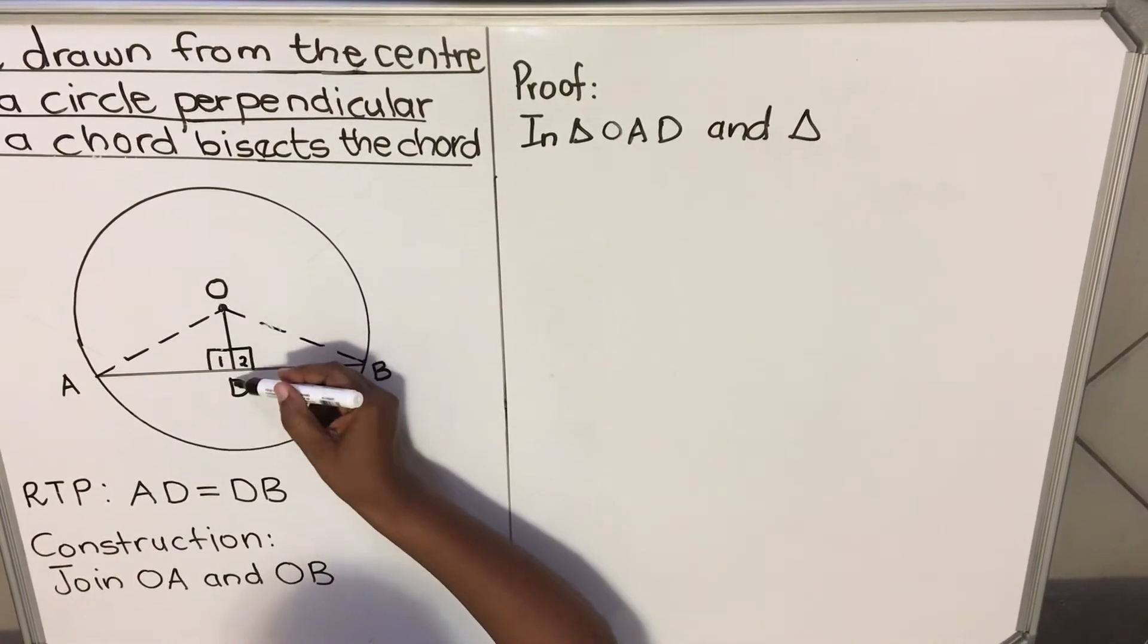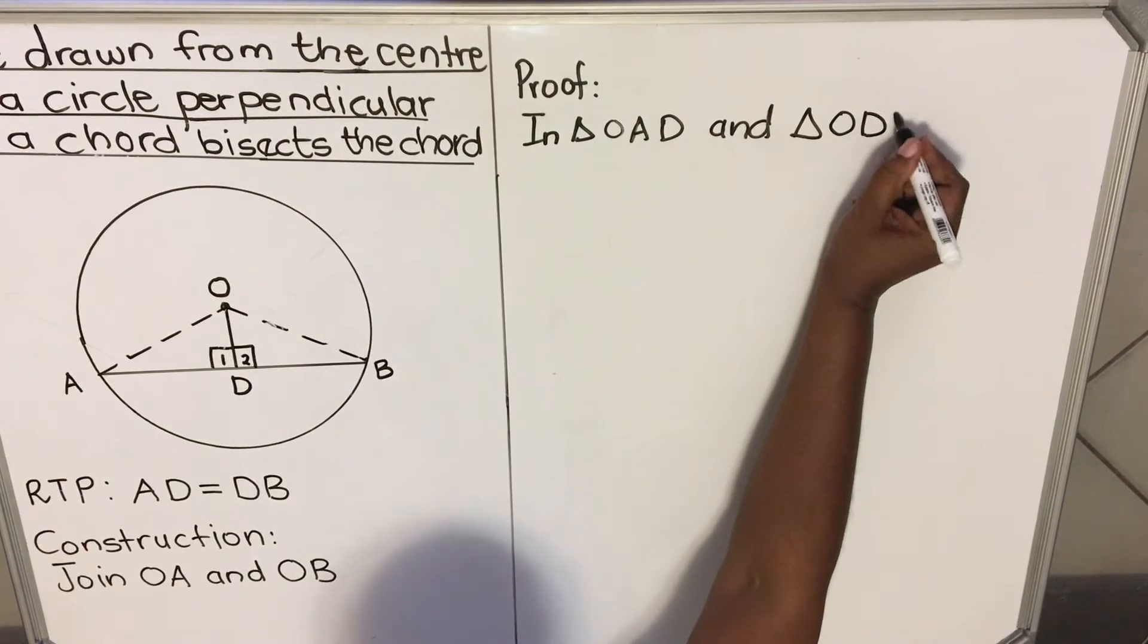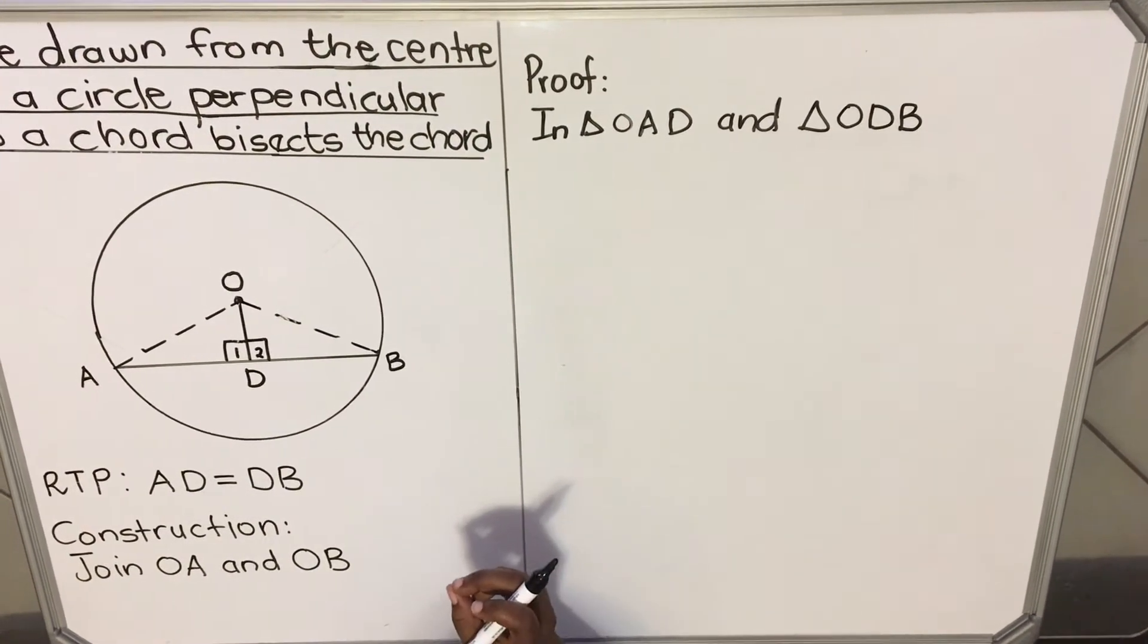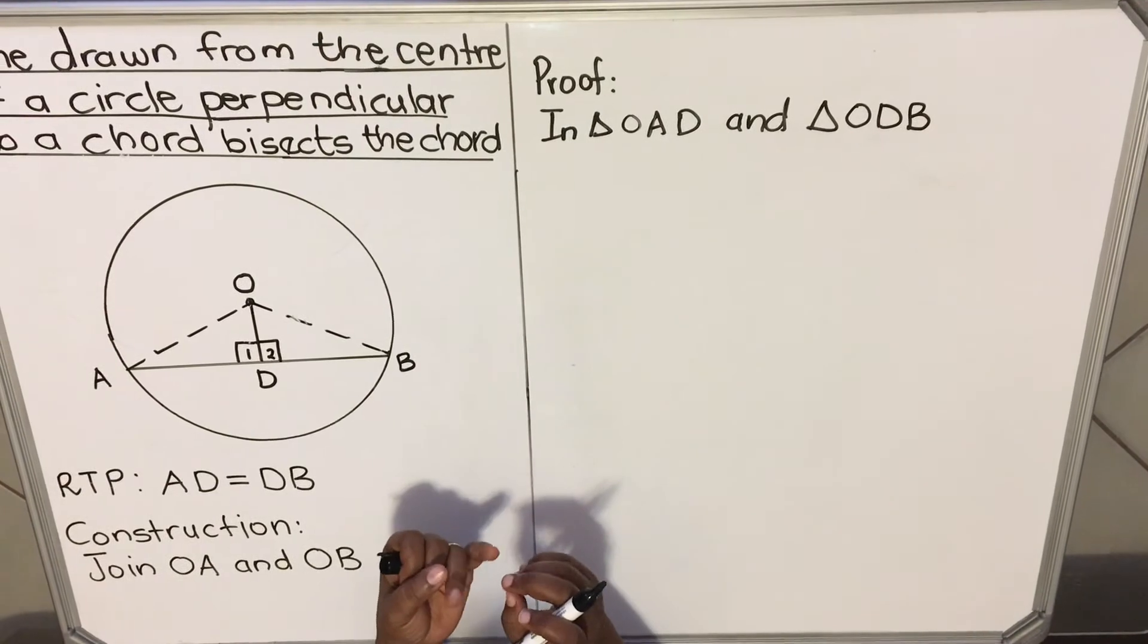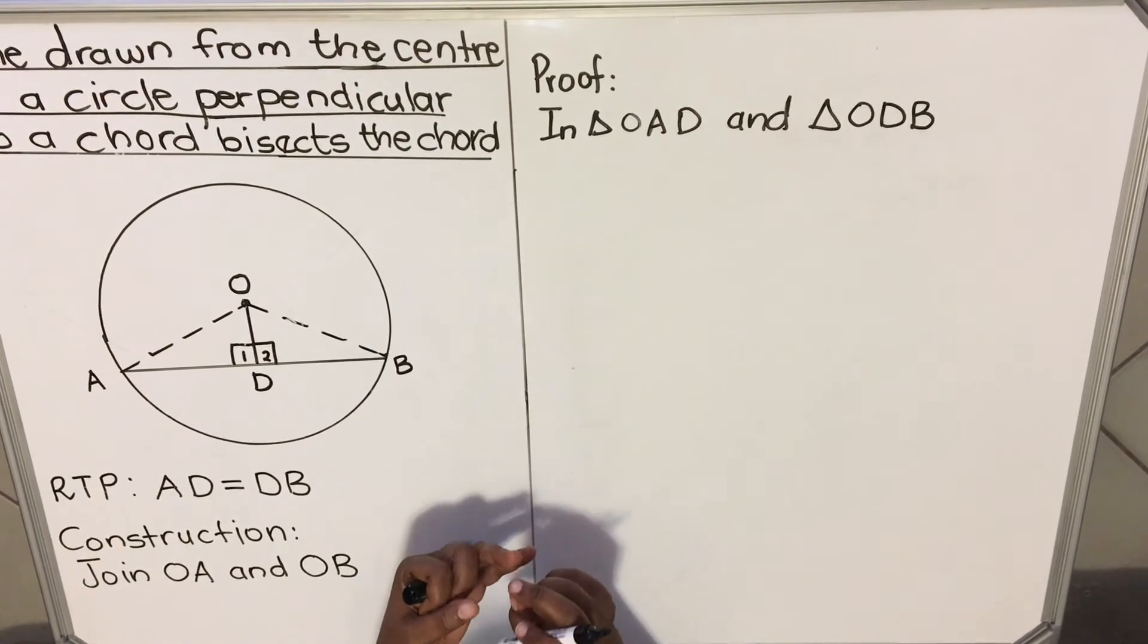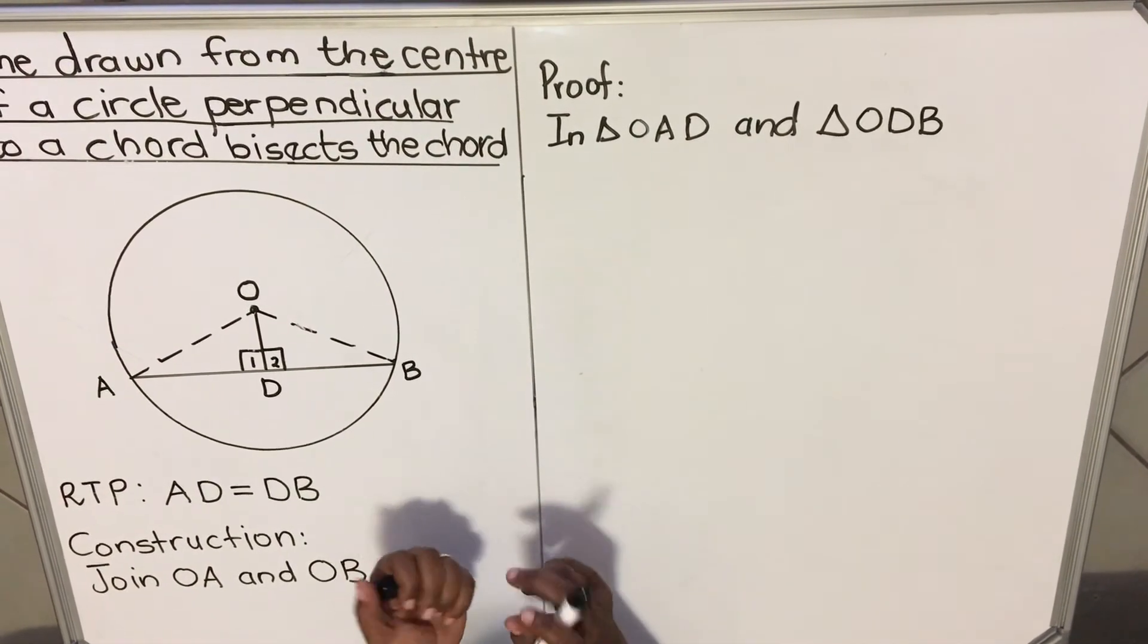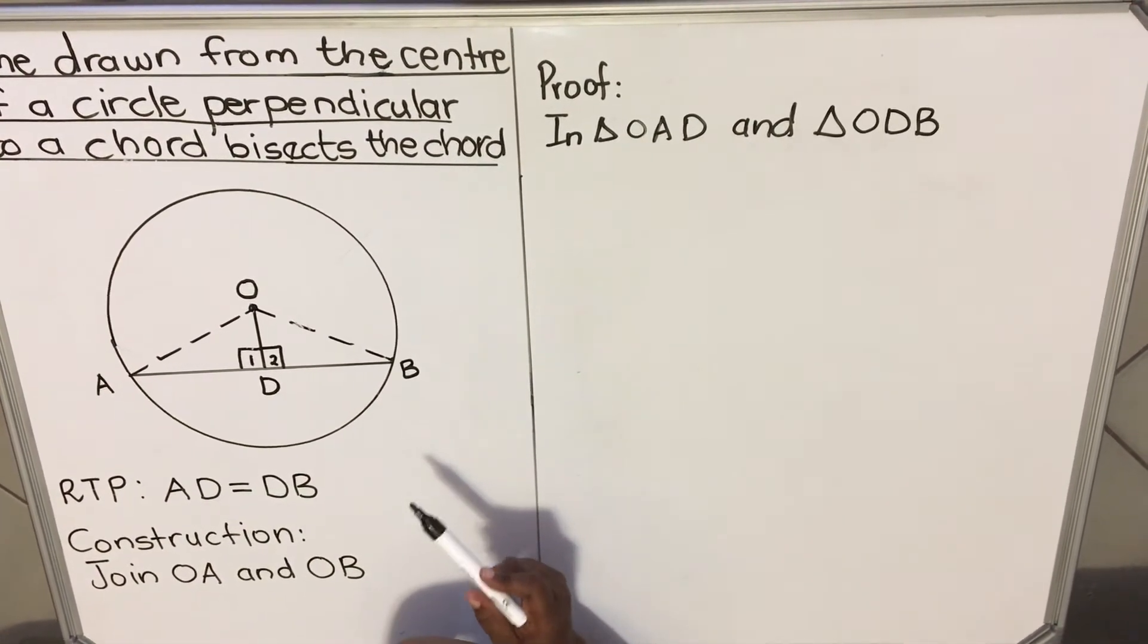You remember with congruency, you need to have angle, angle, angle, equal, or angle, side, angle, or right angle, hypotenuse, and side. This is what we're going to use to prove congruency in this theorem. We're going to use right angle, hypotenuse, and side. So the first thing that we're going to write, we're going to write AO, in this triangle.